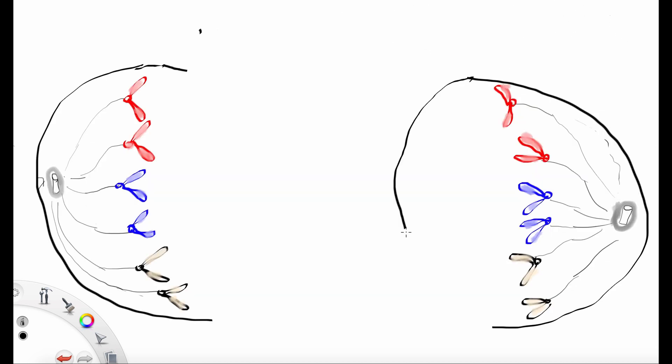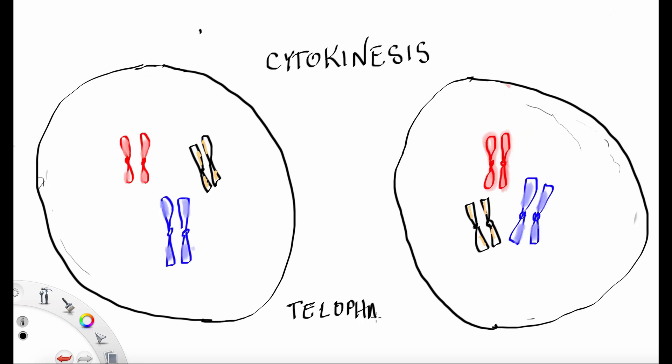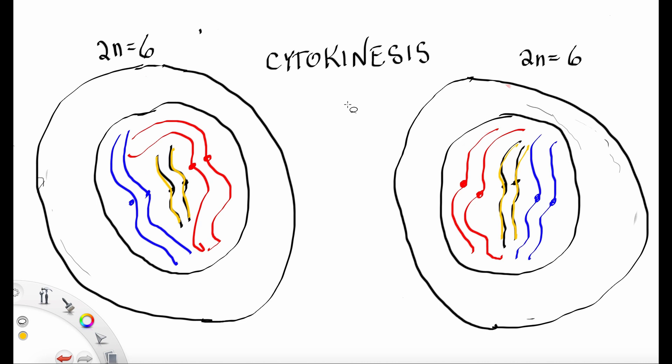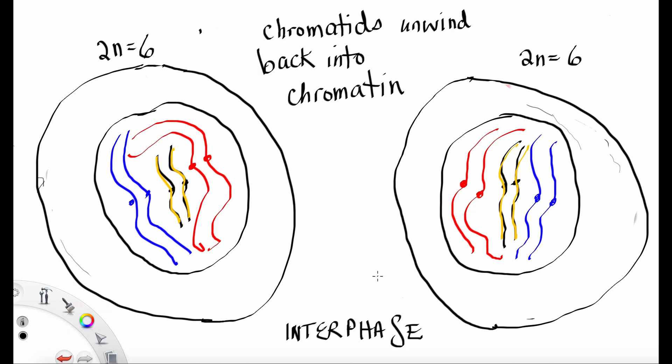And finally, the last step is telophase. Cytokinesis is when the cell splits apart, and telophase is our last stage. You can see that there's 6 chromatids that are located in the daughter cells. They turn back into chromatin. They unwind back into chromatin. And we're back into interphase now.